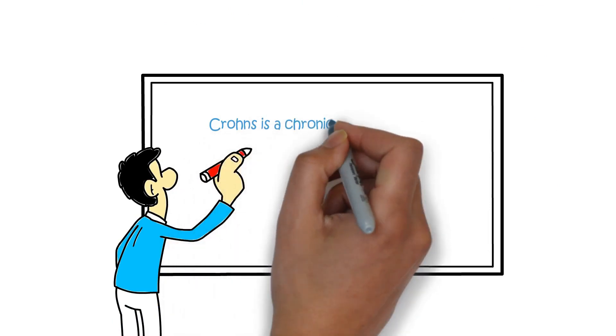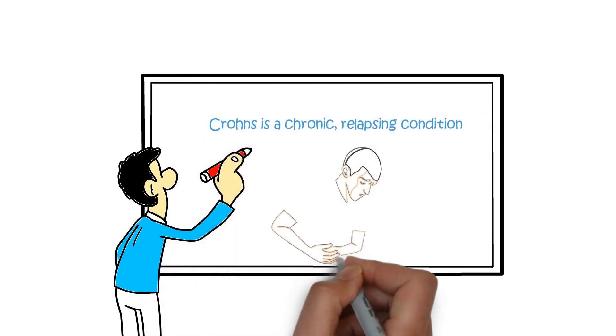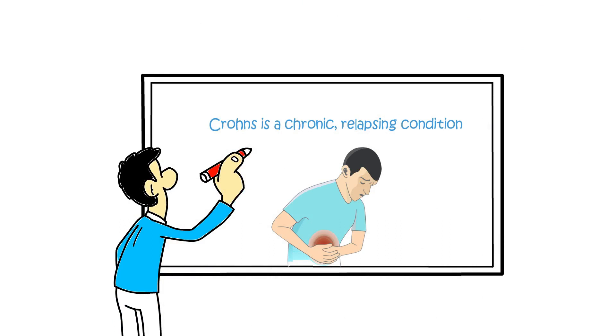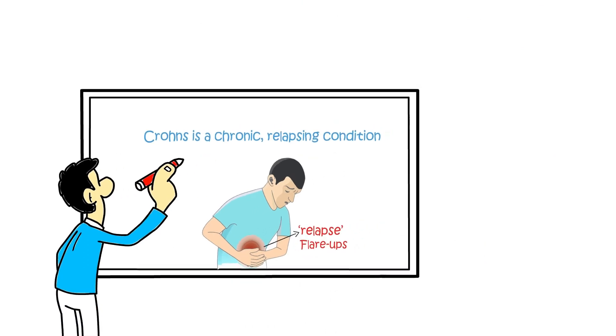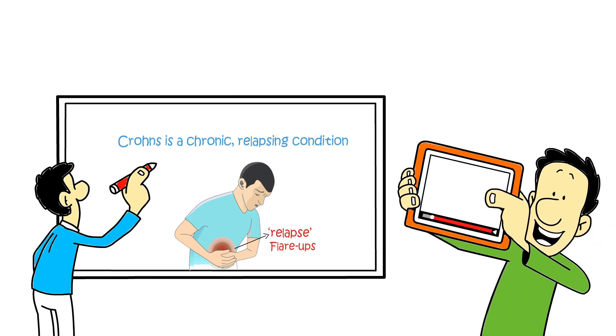Crohn's is a chronic, relapsing condition. Chronic means you will have this disease for a long time and symptoms can relapse in what are called flare-ups. We will cover this in more detail a little later in the video.